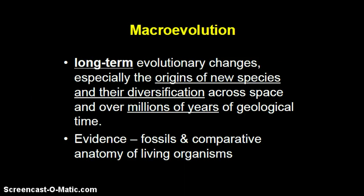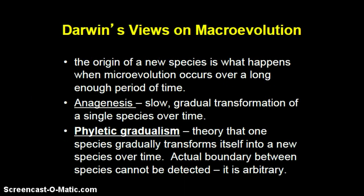Macroevolution refers to long-term evolutionary changes, especially the origin of new species and their diversification across space and over millions of years of geologic time. The evidence for this comes from both fossils and comparative anatomy of living organisms. Darwin's view on macroevolution was essentially the process of natural selection and mutation — microevolution — occurring over long periods of time: a slow, gradual transformation of a single species. This idea became known as phyletic gradualism, the theory that one species will gradually transform itself into new species over time, wherein the actual boundary between species A and species B cannot actually be detected.